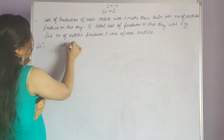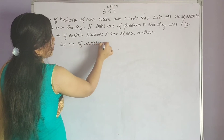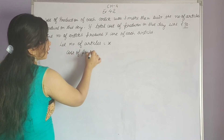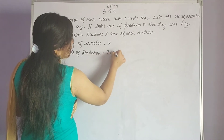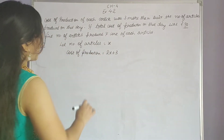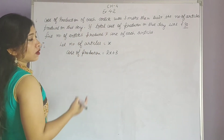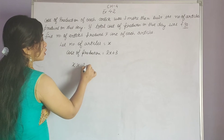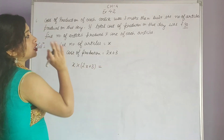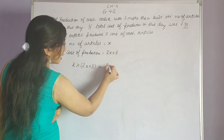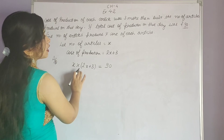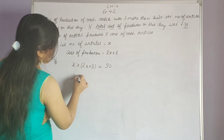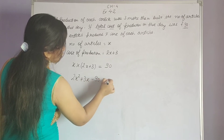Let's suppose the number of articles is x. Now the cost of production of each article, according to the question, is two times x plus three — that is 2x plus 3. Total cost of production equals number of articles multiplied by cost per article. According to the question, total cost is 90 rupees. So we get the equation: x times (2x plus 3) equals 90, which gives 2x squared plus 3x minus 90 equals 0.